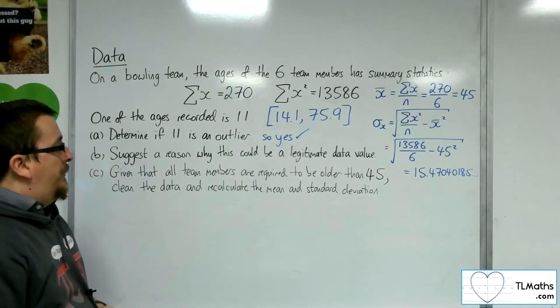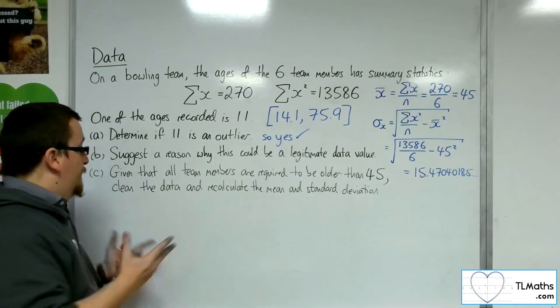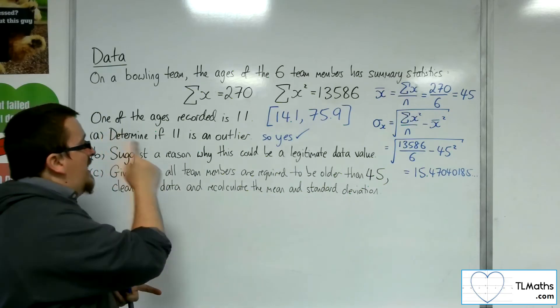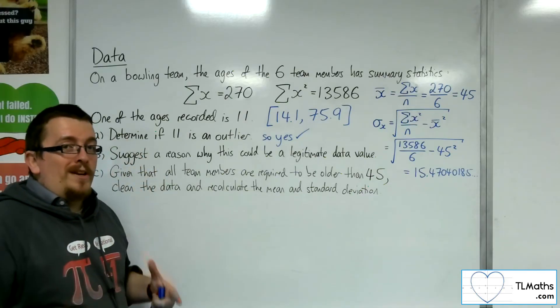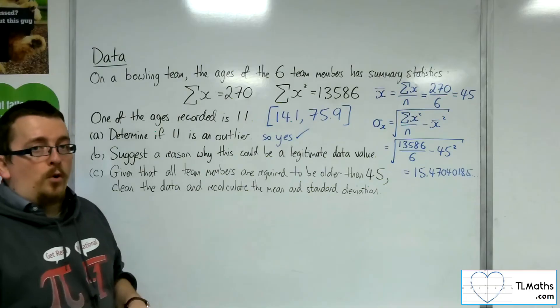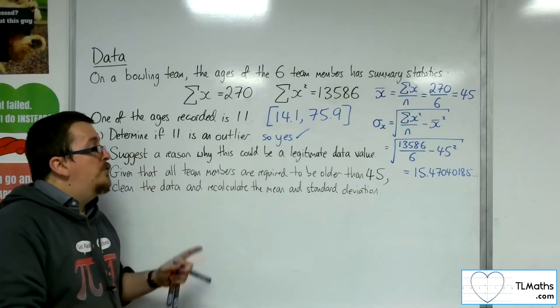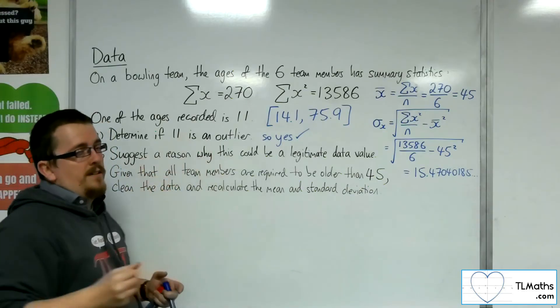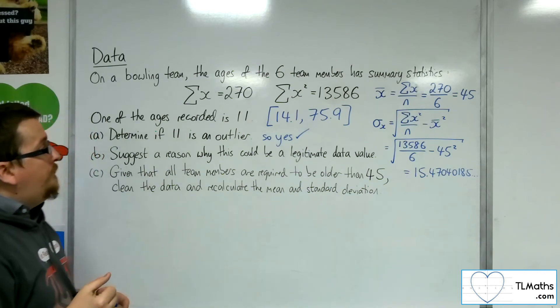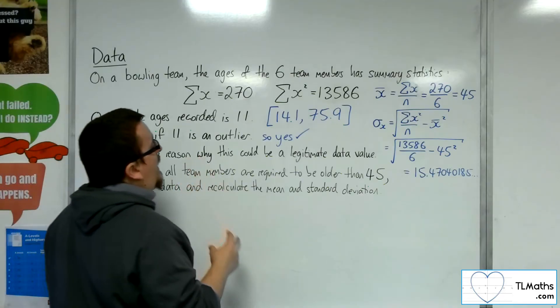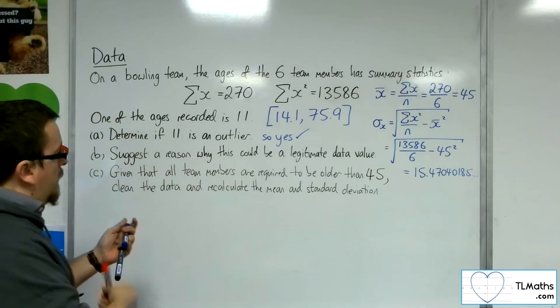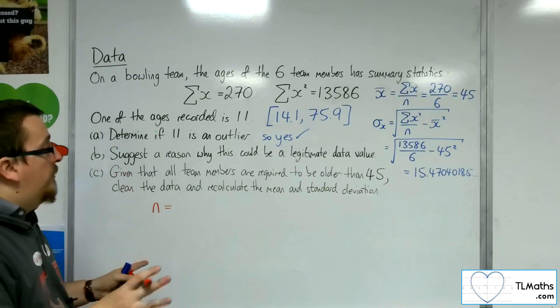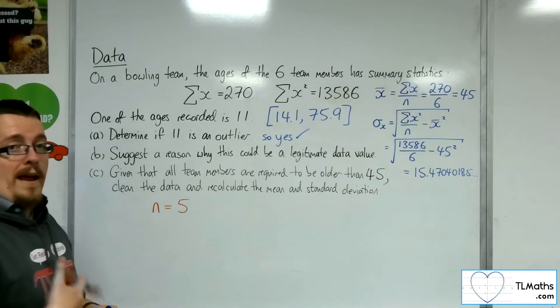Given that all team members are required to be older than 45, clean the data and recalculate the mean and standard deviation. So clearly, the 11-year-old that we've got there, there isn't actually an 11-year-old on the team. Their age has been recorded incorrectly. And because we cannot assume what age was actually meant to have been recorded, we must delete that bit of data from the set. We now have, because we've got rid of the 11-year-old that didn't actually exist, we're now down to 5 team members. So n is 5.